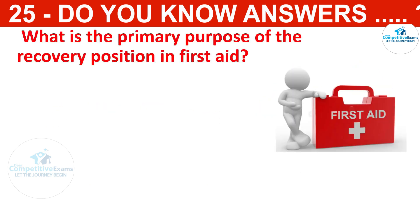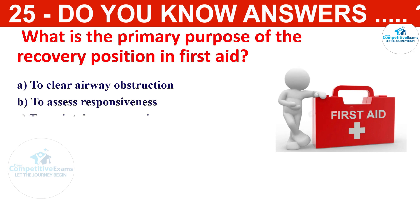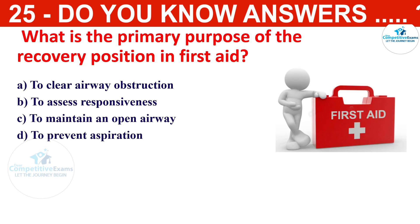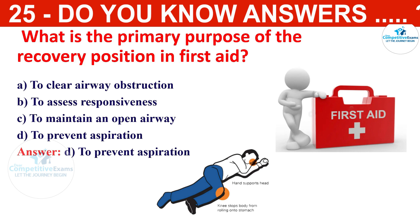What is the primary purpose of the recovery position in first aid? The options are to clear airway obstructions, to assess responsiveness, to maintain an open airway, or to prevent aspiration. The correct answer is to prevent aspiration. The recovery position helps to keep the airway clear and reduce the risk of aspiration in an unconscious person.